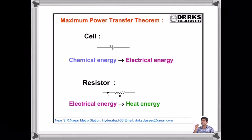A cell is a device which converts chemical energy to electrical energy, whereas a resistor is a device which converts electrical energy to heat energy. So a cell can transfer energy to a resistor. Let us see under what conditions the transfer of power from a cell to an external resistance is maximum.